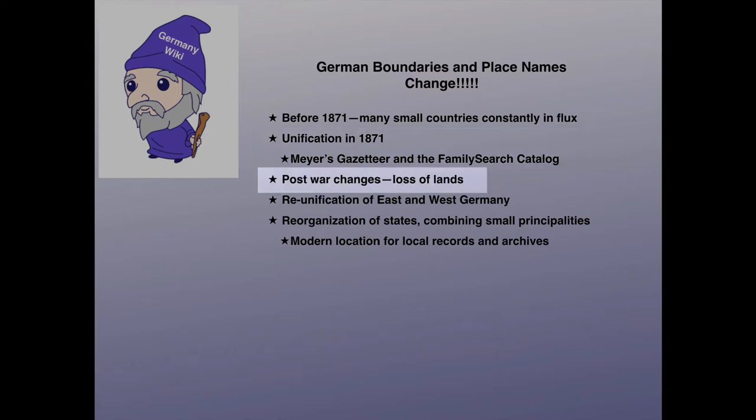As Germany lost the two world wars, parts of Germany were given to Poland, Russia, Czechoslovakia, France, and Lithuania. Germany was split into East and West Germany, and eventually East and West Germany were reunited.